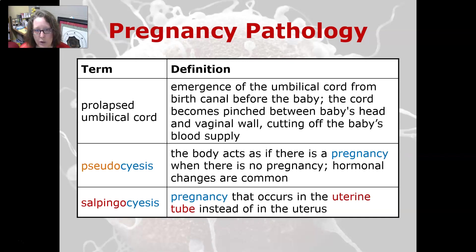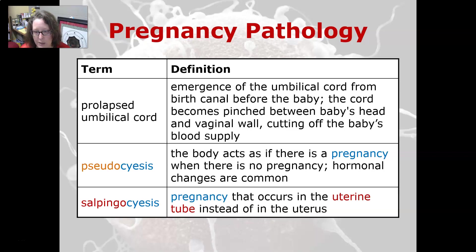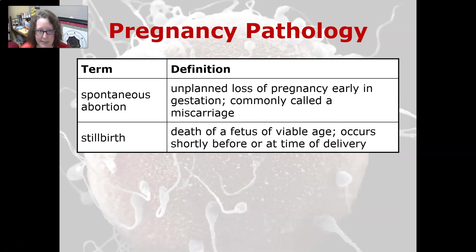A prolapsed umbilical cord is the emergence of the umbilical cord from the birth canal before the baby — the cord becomes pinched between the baby's head and the vaginal wall, cutting off the baby's blood supply, which can be dangerous. Pseudocyesis is when the body acts as if there is a pregnancy when there is no pregnancy; hormonal changes can trigger a positive pregnancy test. Salpingocyesis is a pregnancy that occurs in the uterine tube instead of in the uterus, which can be dangerous to both the baby and the mother. Spontaneous abortion is an unplanned loss of a pregnancy early in gestation, commonly called a miscarriage. Stillbirth is the death of a fetus of viable age, occurring shortly before or at the time of delivery.